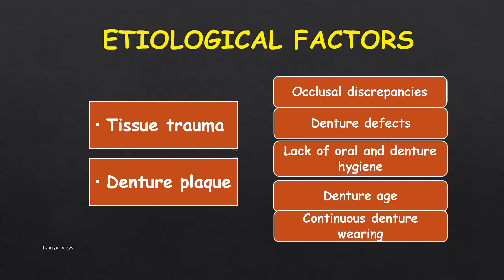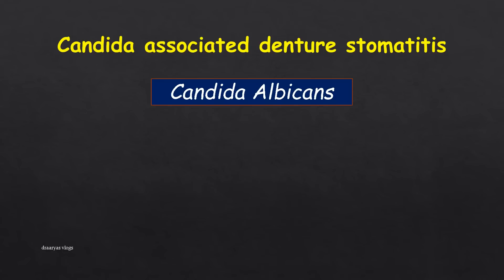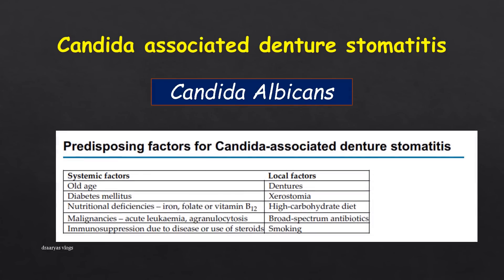The fourth type is Candida-associated denture dermatitis. Candida albicans is most often associated with denture dermatitis along with other causative factors. There are certain predisposing local as well as systemic factors for this type. Systemic factors include old age, diabetes mellitus, nutritional deficiencies (iron, folate, or vitamin B12), malignancies such as acute leukemia, agranulocytosis, and immunosuppression due to disease or use of steroids. Local factors are xerostomia, high carbohydrate diet, broad spectrum antibiotics, and smoking.